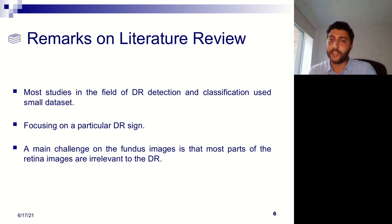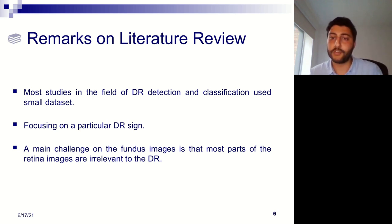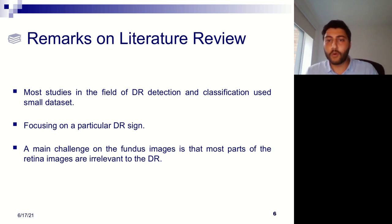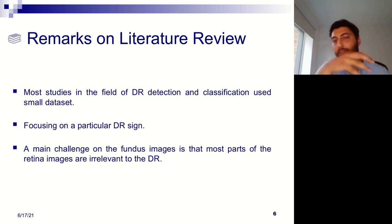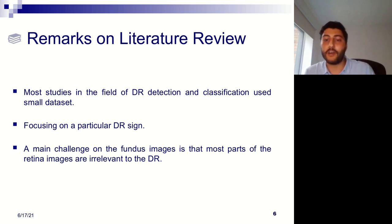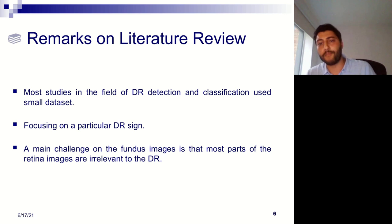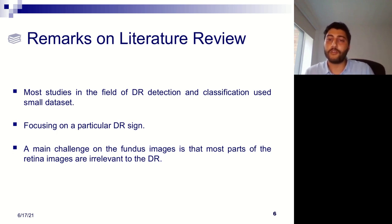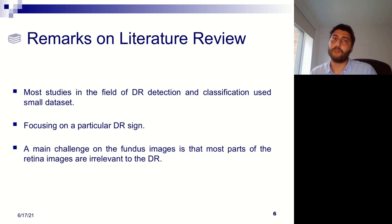Another issue is that many papers focus only on a particular retinopathy sign — for example, hemorrhages or exudates — which helps diagnosis but is not comprehensive enough for full image analysis. A more comprehensive system is needed. One further challenge with fundus images is that most parts of the retina image are irrelevant to diabetic retinopathy, while some parts have more influence on the final label. Most convolutional neural network approaches proposed for DR classification process the input data without considering this fact.